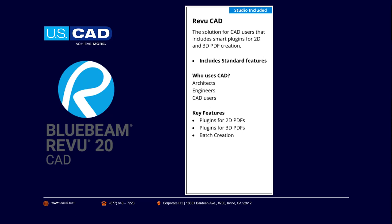Bluebeam Revu CAD has all the same functions of Standard. It also adds in some key features for plugins to make 2D PDF from your CAD software packages, as well as 3D PDF — so if you want to make a 3D PDF from Revit or Navisworks, it gives you that functionality, as well as some batch tools to mass produce PDFs from CAD software.